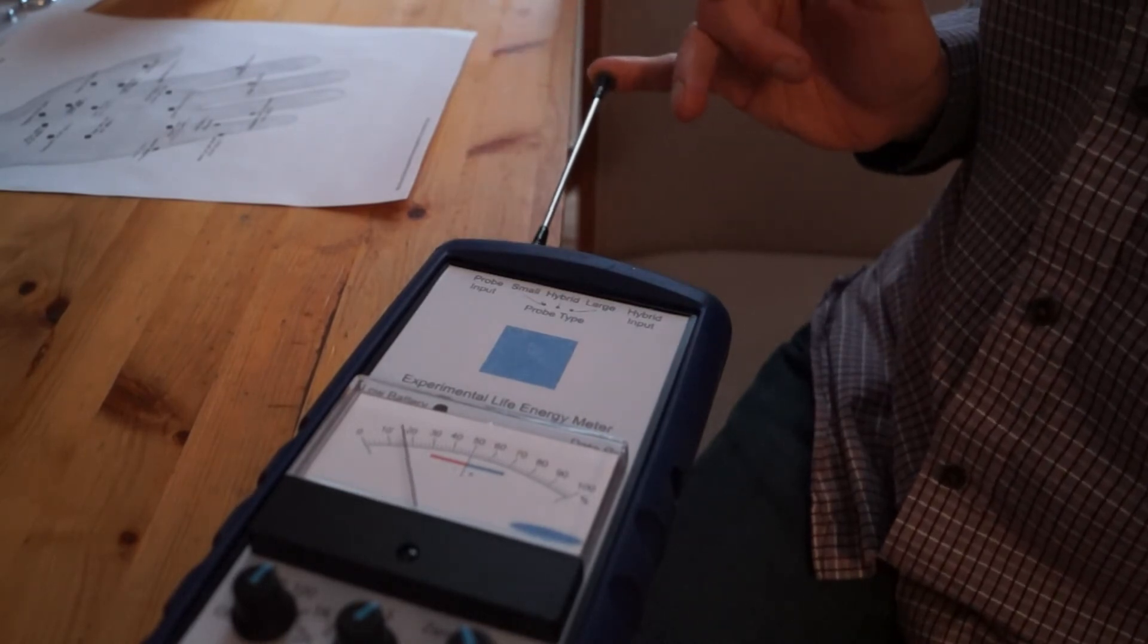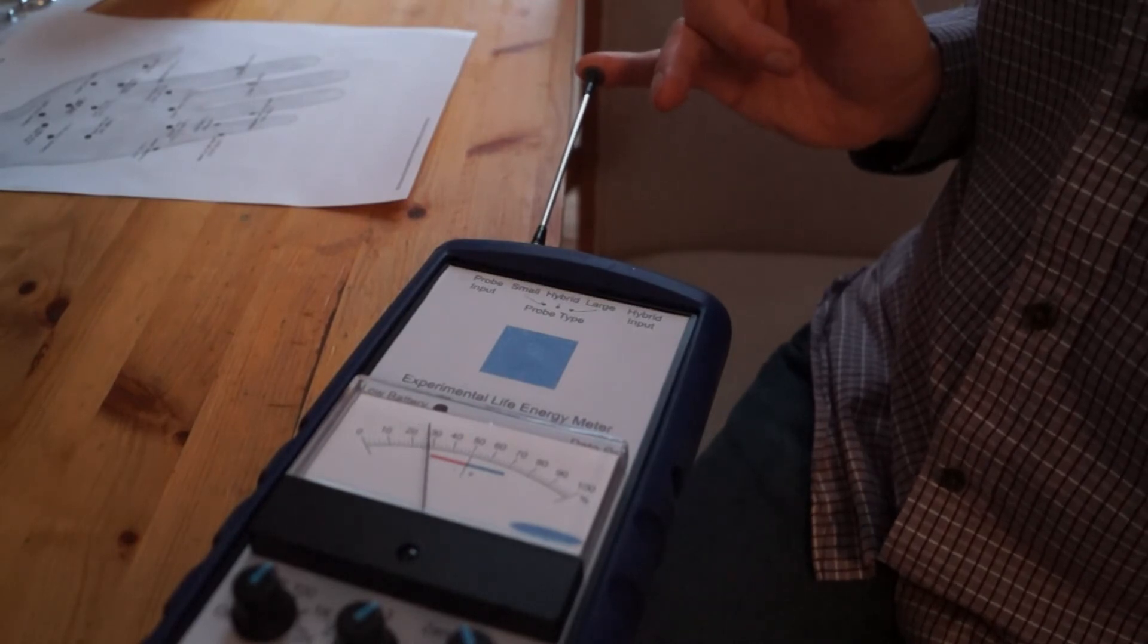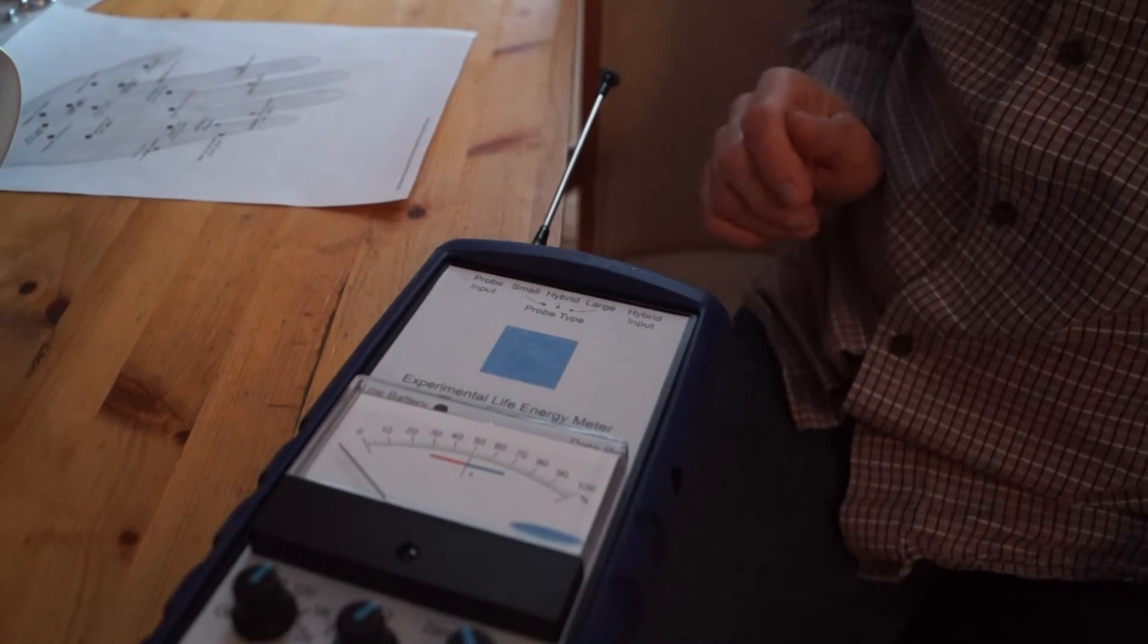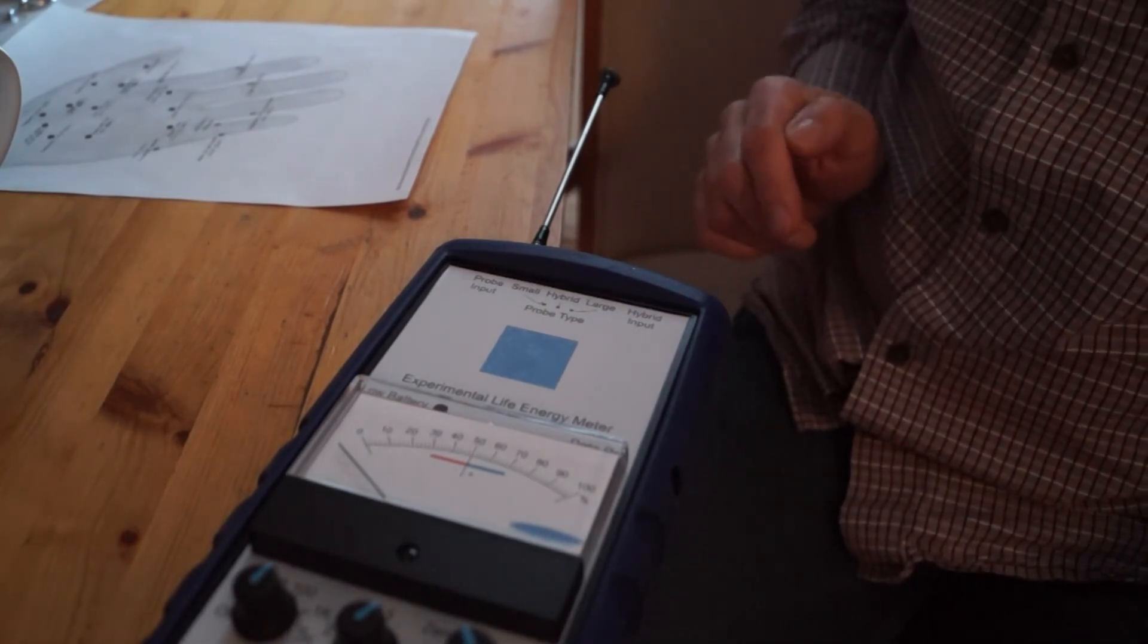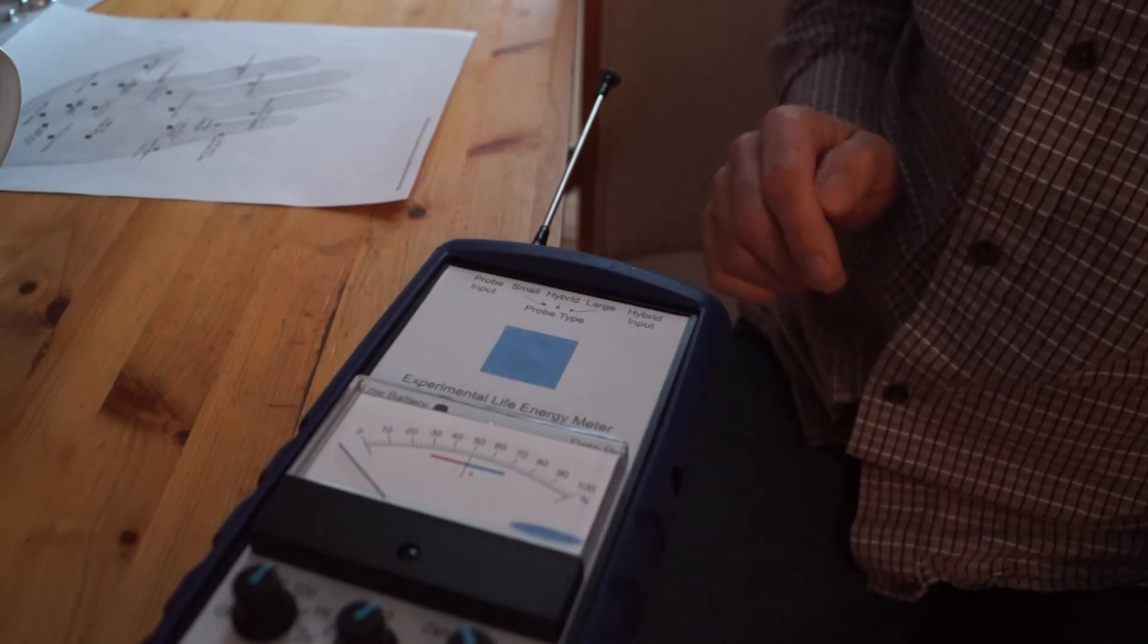And the front of the finger again reads around 28. The acupuncture points can be found simply by aligning the probe with the point and then finding the highest reading. That's when you're directly on top of the acupuncture point.